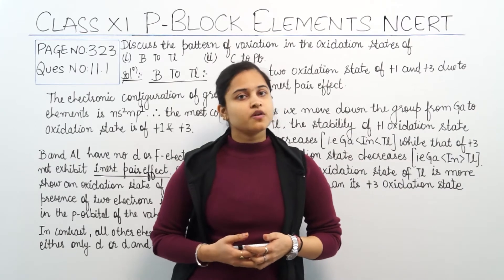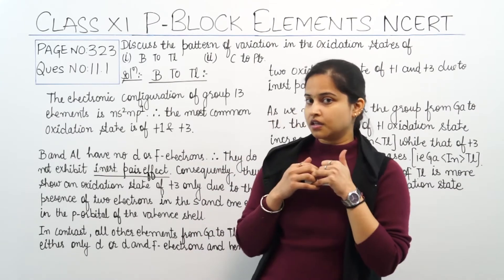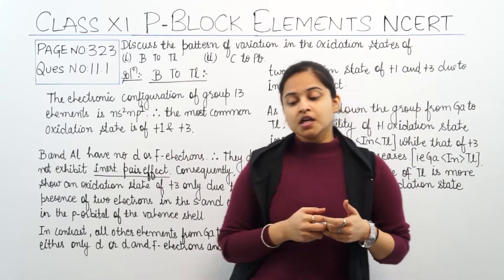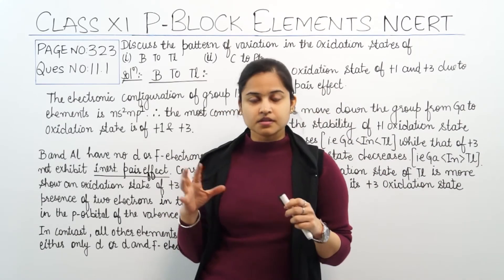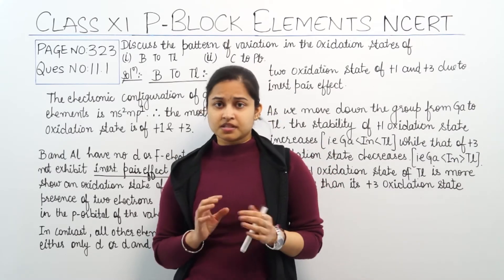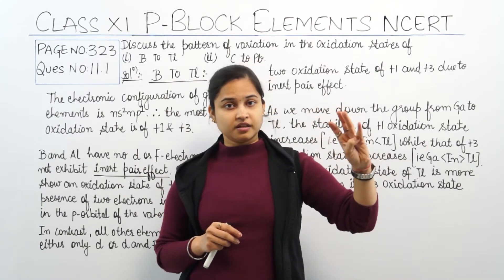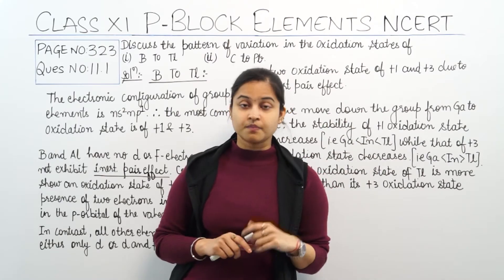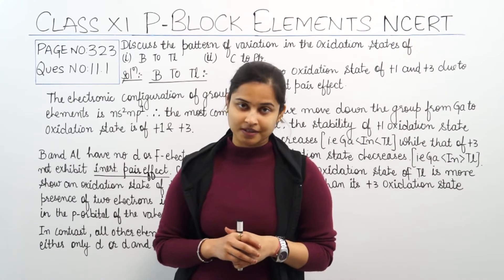We will be discussing the variation pattern of oxidation state in part 1, which is boron to thallium. Boron to thallium are group 13 members — the boron family — which includes boron, aluminium, gallium, indium, and thallium. The electronic configuration of this family is ns², np¹.